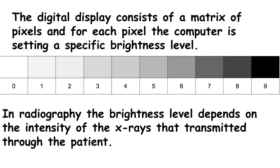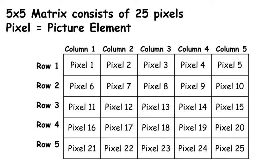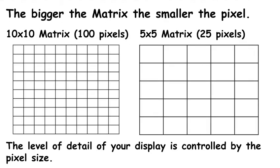The digital display consists of a matrix of pixels, and for each pixel the computer sets a specific brightness level. That brightness level depends on the intensity of the x-rays that transmitted through the patient. The matrix is an array of columns and rows, much like a spreadsheet, and each cell within that matrix is called a pixel. Here we have a five by five matrix consisting of 25 pixels. The bigger the matrix, the smaller the pixel.